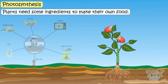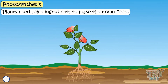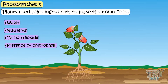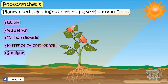Similarly, plants require water, nutrients, carbon dioxide, and the presence of chlorophyll, and also some energy — that is sunlight — to prepare their food. Now let's learn about each ingredient the plants need.